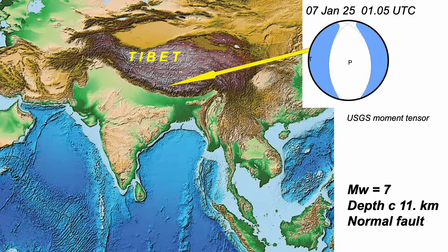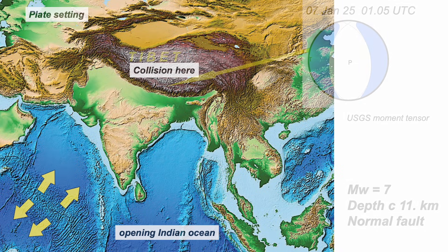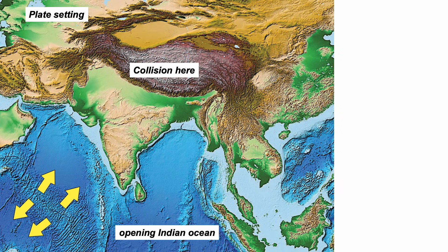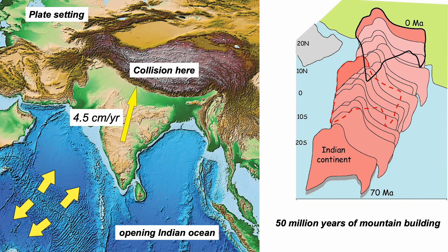Let's step back and put this earthquake in its tectonic context on the southern margin of the Tibetan Plateau. The plateau, of course, is part of a whole series of mountain ranges in Central Asia. These mountains are formed by the collision between the Indian subcontinent and the rest of Asia, recorded by the opening of the Indian Ocean, which has allowed geologists to reconstruct the convergence history. India has been colliding with the rest of Asia for around 50 million years, and it's continuing at a rate of around 4.5 centimetres a year.